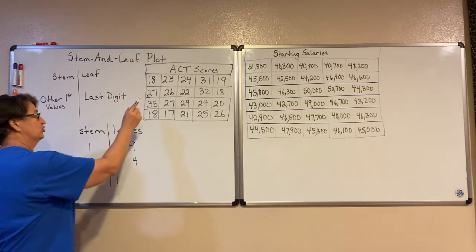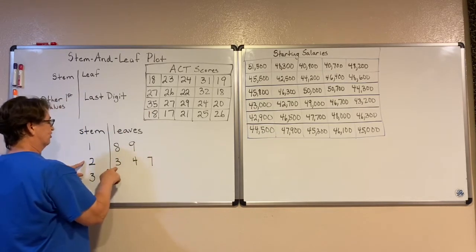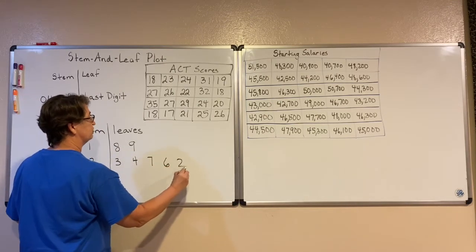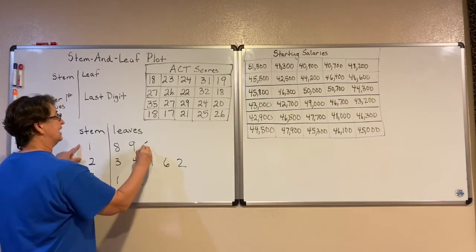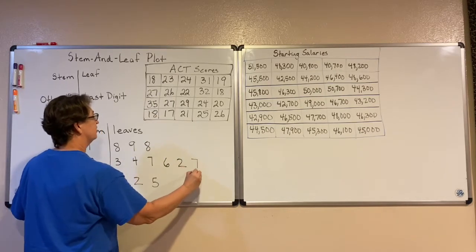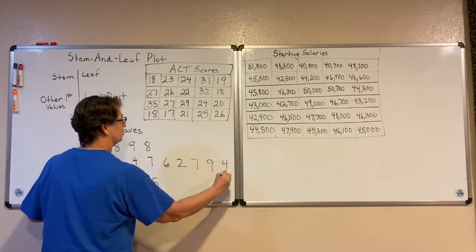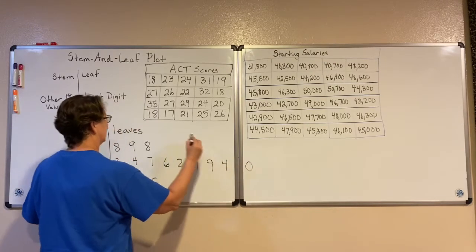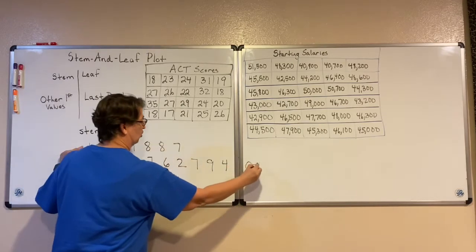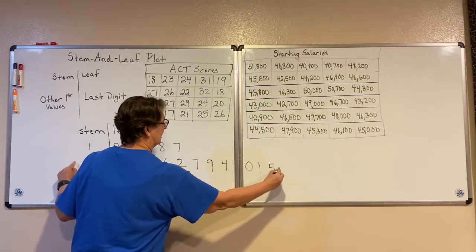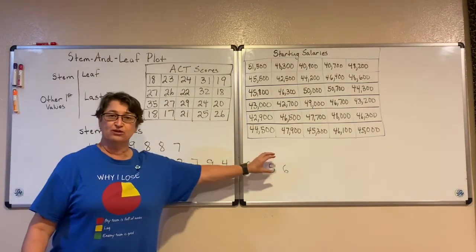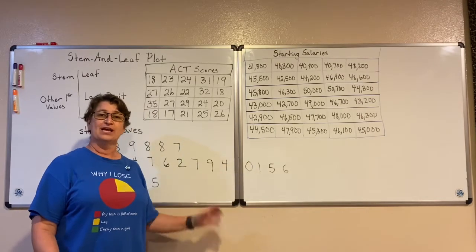I'm going to do that for each one of my data values: 23, 24, 27, 26, 22, 32, 18, 35, 27, 29, 24, 20, 18, 17, 21, 25, and 26. We can clearly see that there are more values in our twenties than in any other category.